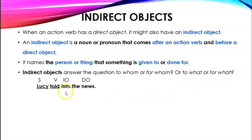So an example, Lucy told him the news. In this sentence, we find the direct object being news here. Lucy told what? Lucy told the news. News is your direct object. So then you ask the next question. To whom did she tell it? The answer is him.